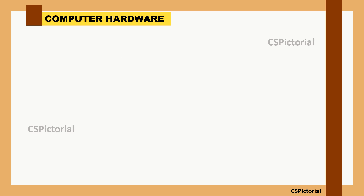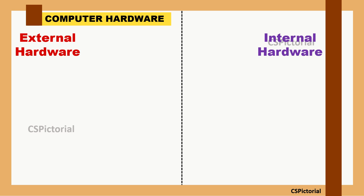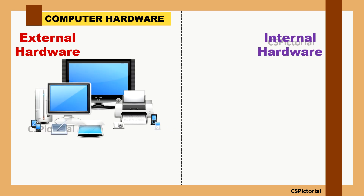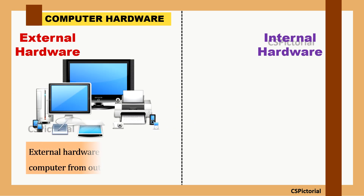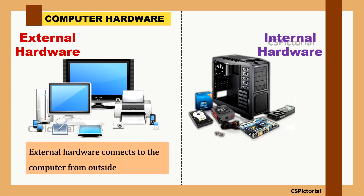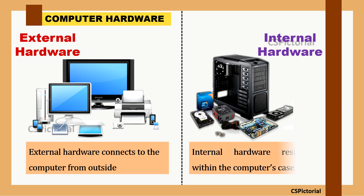Computer hardware can generally be categorized as external hardware and internal hardware. The components that connect to the computer from outside are the external hardware. Internal hardware resides within the computer's case and is essential for the system's operation.